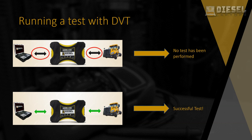Next is running a test with the DVT. Black arrows between both the vehicle and the diagnostic adapter, and the diagnostic adapter and the PC, indicate that no test has yet been performed. On the other hand, if we had green arrows from both our adapter to the vehicle and the adapter to the PC, this would indicate a successful test and we are good to go.